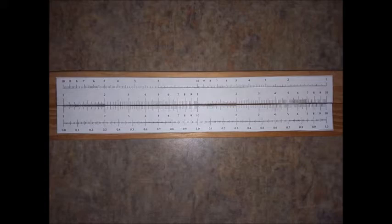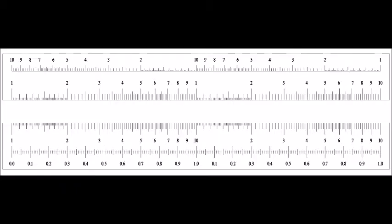The secret to the slide rule is the logarithmic scale. Notice here that the spacing from 1 to 2 is not the same as the spacing from 2 to 3. In fact, the spacing gets smaller between each pair of consecutive numbers as we progress from 1 to 10.